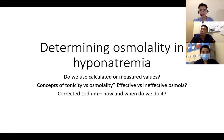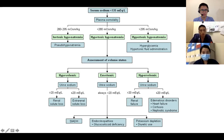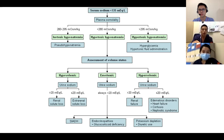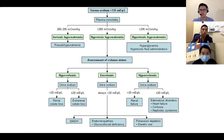Most of the time when we manage hyponatremia, we are dealing with hypotonic hyponatremia — hypo-osmolar hyponatremia — which is by far the most common. The isotonic and hypertonic ones are less common. Because sodium is the key contributor to osmolality — effective osmolality being 2 × sodium + glucose — when sodium is low, the patient usually has hyposmolality. Hyperosmolality only occurs when there is an osmolar gap from something else exerting an osmotic effect, such as glucose. Therefore, in most cases the calculated and measured osmolality should not differ greatly.